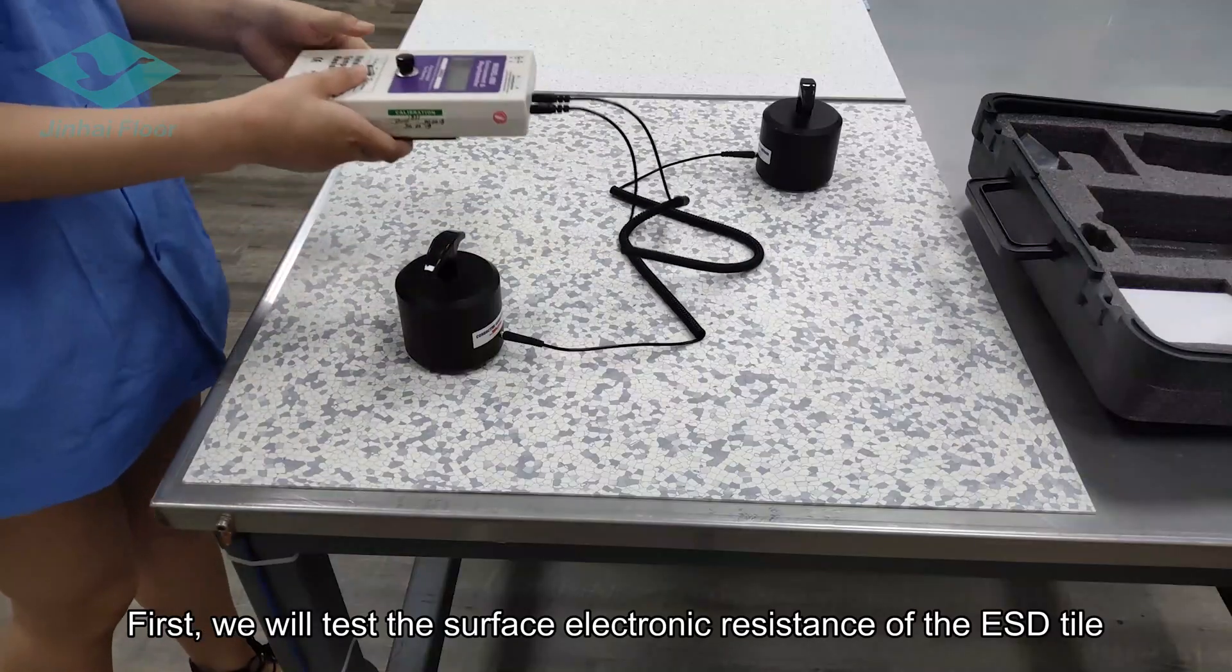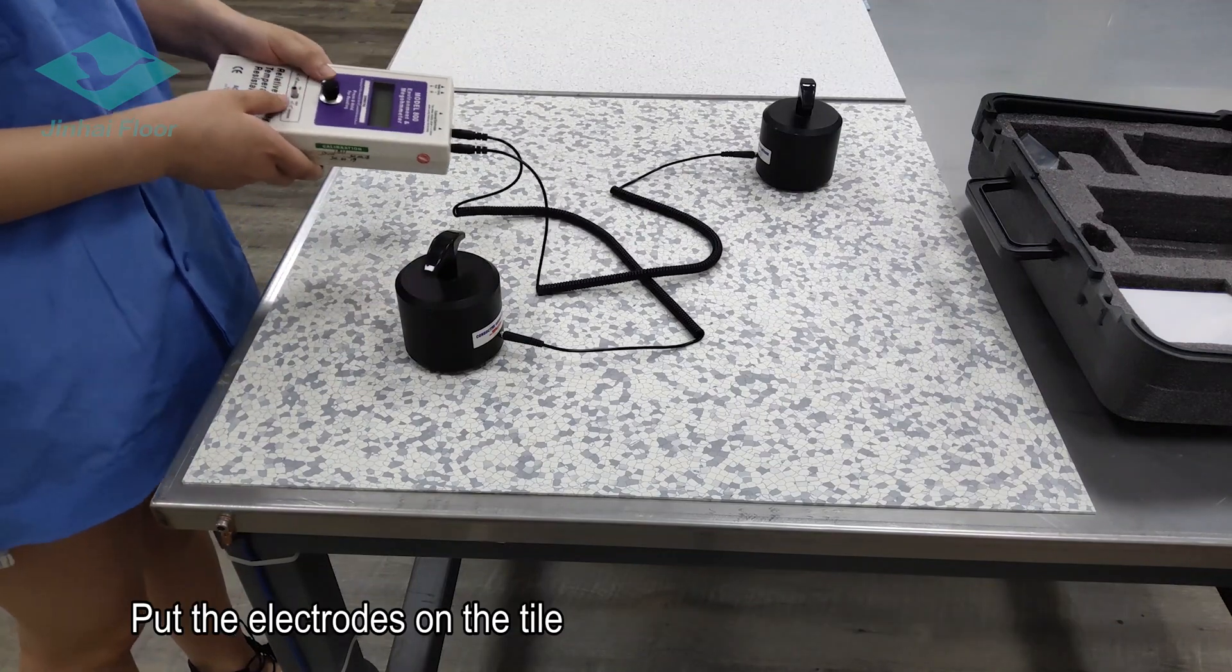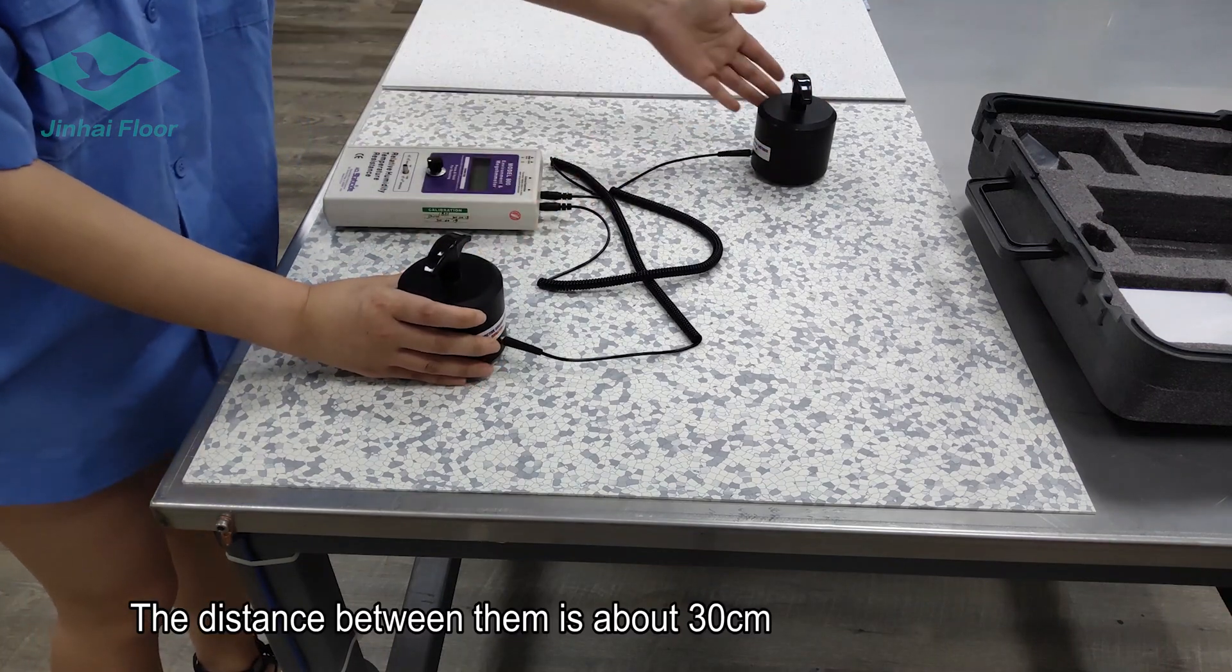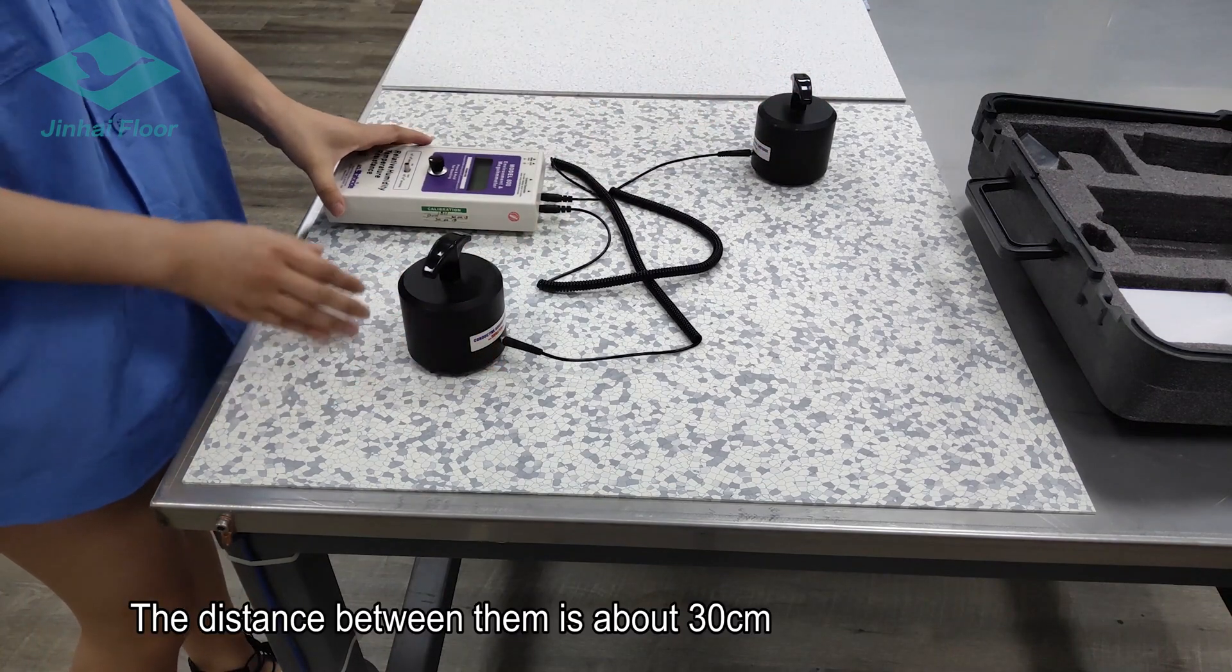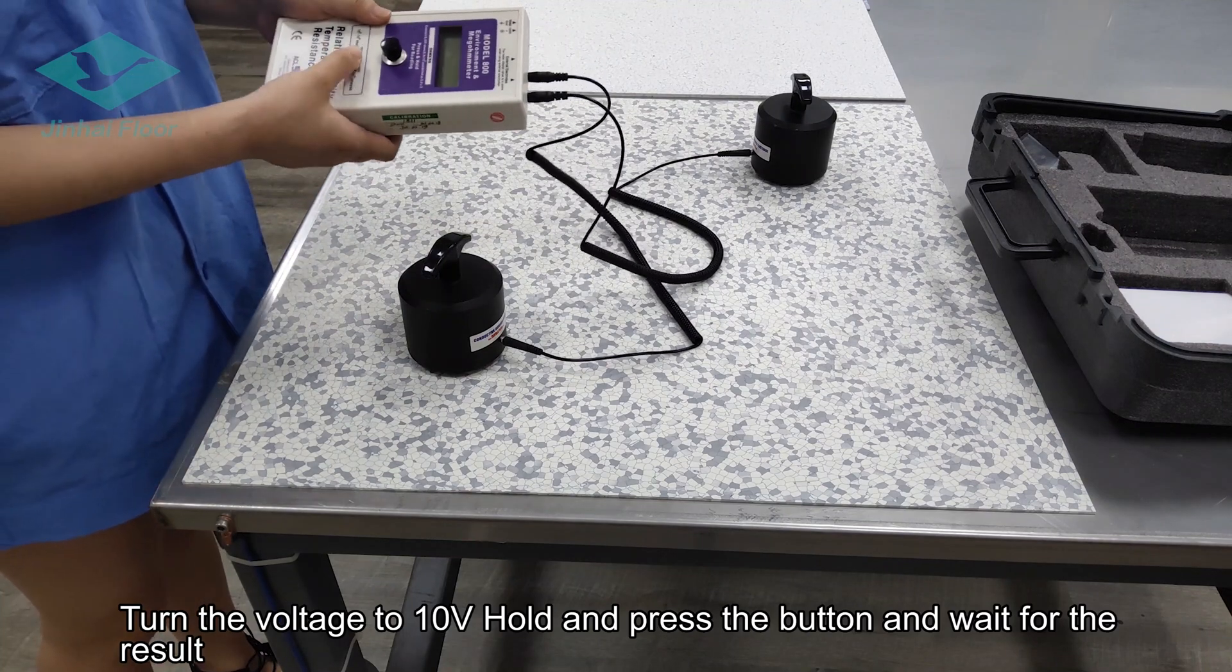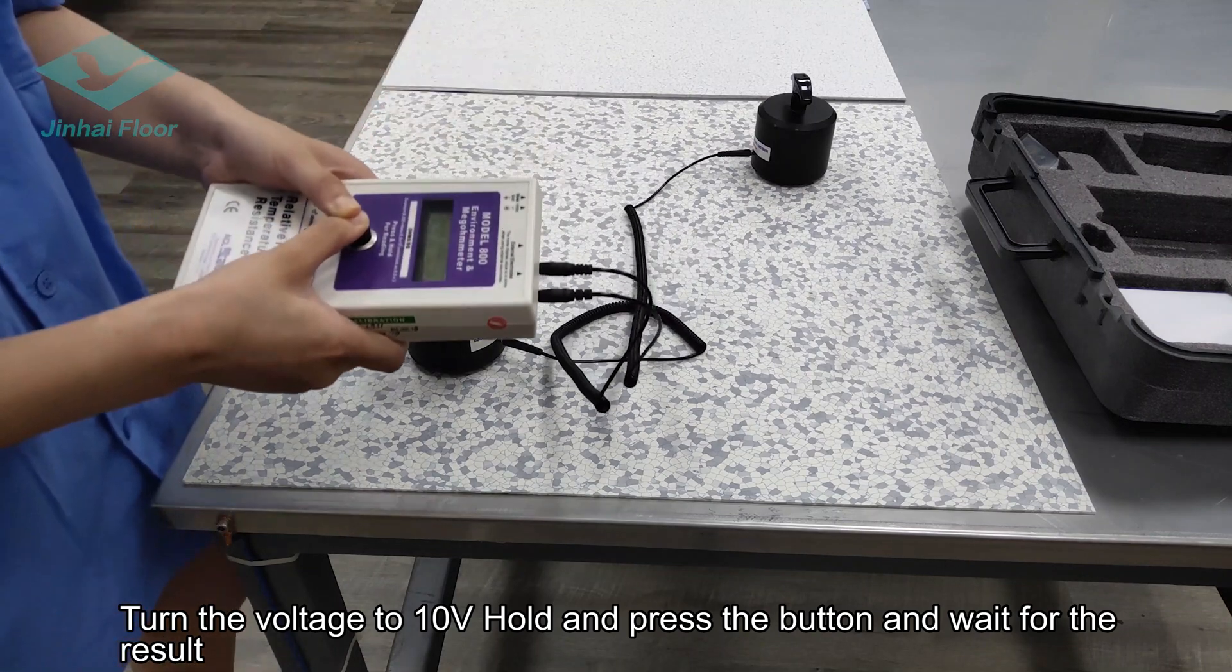First, we will test the surface electronic resistance of the ESD tile. Put the electrodes on the tile. The distance between them is about 30 centimeters. Turn the voltage to 10 volt. Hold and press the button and wait for the result.